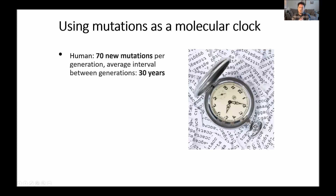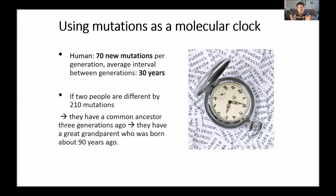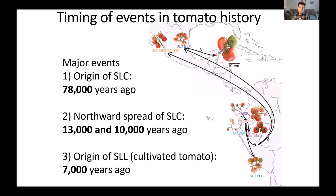Part of my work is to use mutations that I find in the genome as a molecular clock. What do I mean by that? In humans, in every generation we have 70 new mutations, and if we see two people that differ by 210 mutations, that means they have a common ancestor that goes back three generations. I use the same principles to date major events in tomato domestication history.